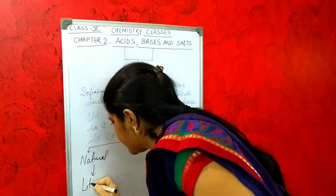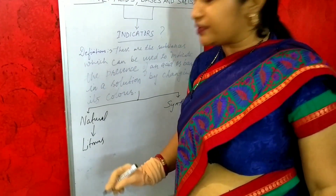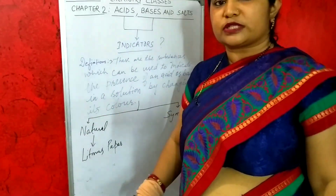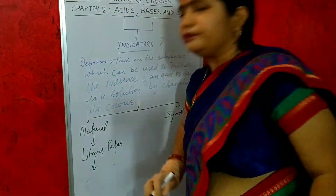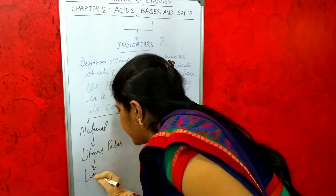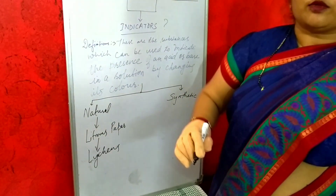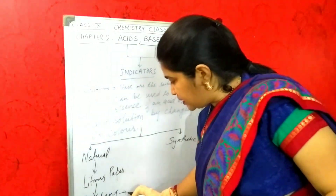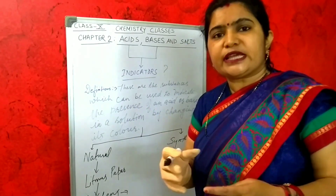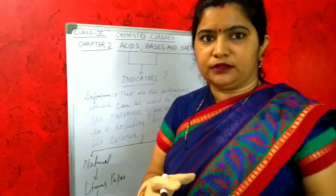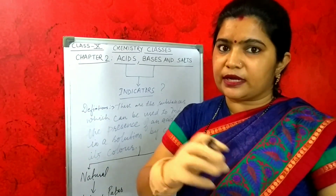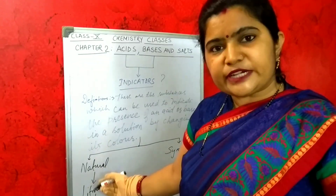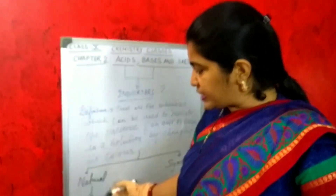You must have heard about litmus paper. Litmus paper is included under natural indicators because it is derived from lichens. Lichens are biological organisms which are the symbiotic association of algae and fungi — they are dependent on each other. Lichens are used for the preparation of litmus paper, which is used as a natural indicator in laboratories.